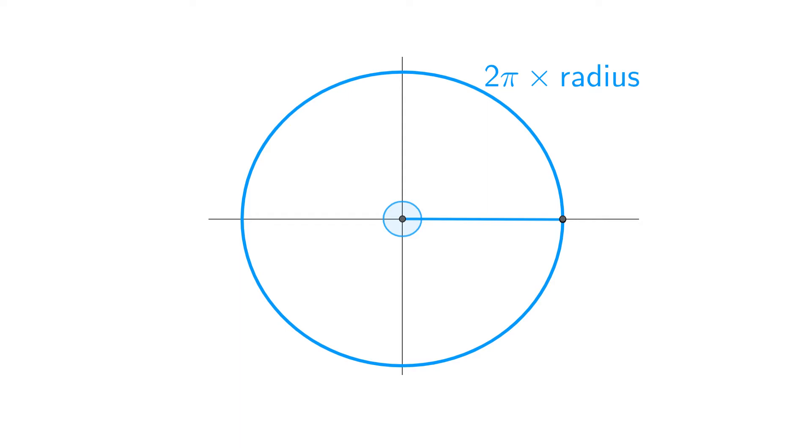So let's call the angle in a full circle 2π radians. Then the angle in a half circle will be π radians.